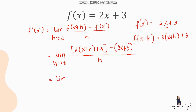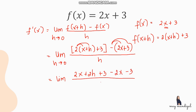Simplify the numerator: distribute 2 to get 2x plus 2h plus 3, then apply the negative to get minus 2x minus 3, all over h as h approaches 0. We can cancel 2x with negative 2x and 3 with negative 3, leaving 2h over h. Since both numerator and denominator have h, we cancel it out.